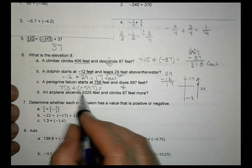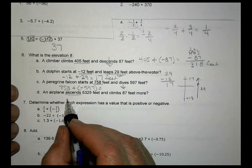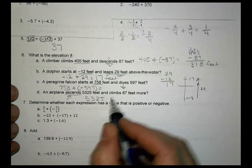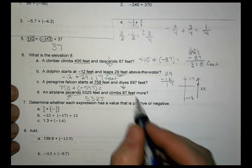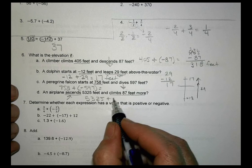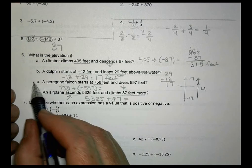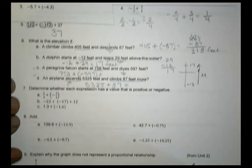And then the last one, a plane ascends. To ascend means to go up 5,325 feet, and then climbs 87 feet more. So it's going to be increasing another 87 feet to find out where that's going to be. So those two, I'll let you figure those out on your own.